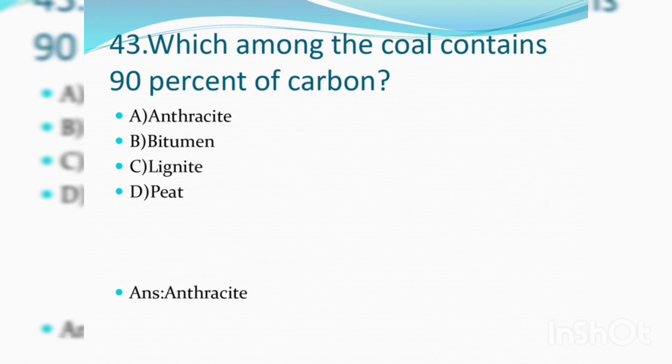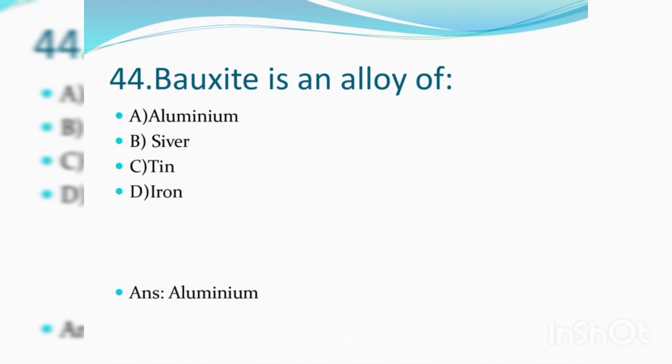Which among the coal contains 90% of carbon: anthracite, bitumen, lignite, or peat? Answer is anthracite. Bauxite is an ore of aluminum.